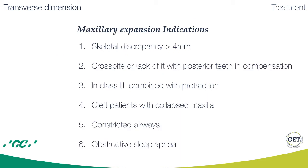Indications for maxillary expansion are skeletal discrepancy bigger than 4 mm, crossbite or lack of crossbite if posterior teeth are in compensation, in Class III combined with protraction, in cleft patients with collapsed maxilla, in patients with constricted airways, and in patients with obstructive sleep apnea.